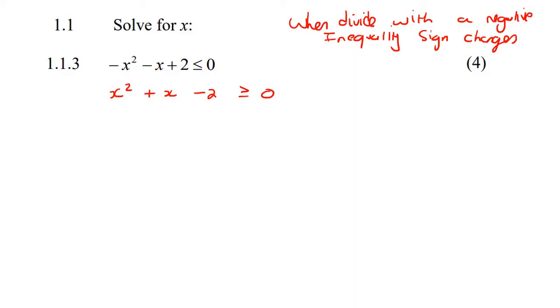What you do now is you can factorize this. So we make our two brackets. And so this would be x and x, and then there'd be a 2 and a 1. You can also use the quadratic formula if you want. This would end up being a plus, and this would end up being a minus.